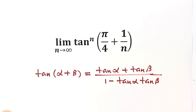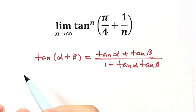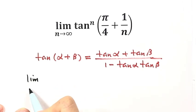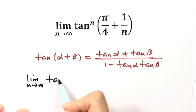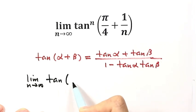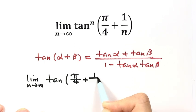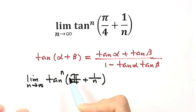Now let's get started with our question. The question is: find the limit as n goes to infinity of tangent (pi over 4 plus 1 over n), raised to the power of n.